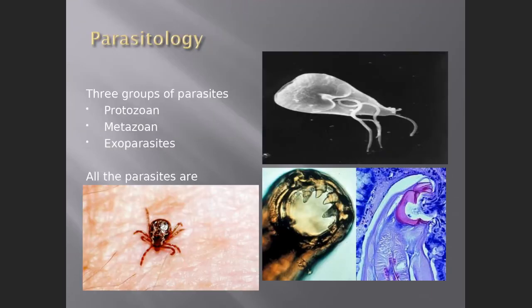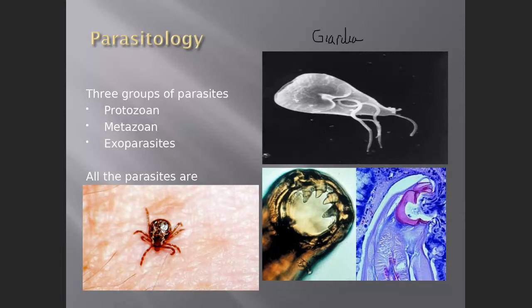Looking at parasites as a whole, there are three different groups. The first group is the single-celled organisms we call protozoans. This is an example — this is Giardia, which causes a type of dysentery, although not usually very serious. It's a single-celled organism.